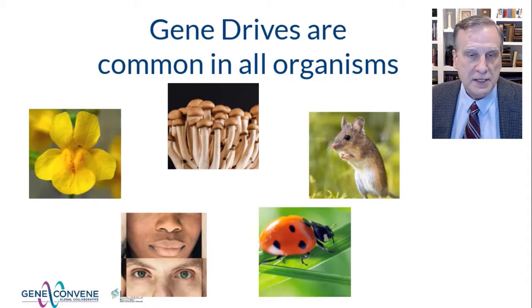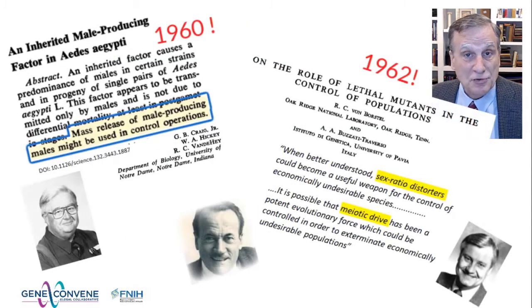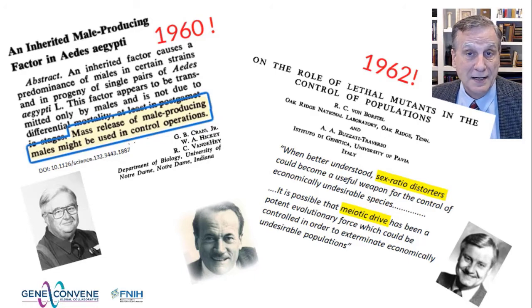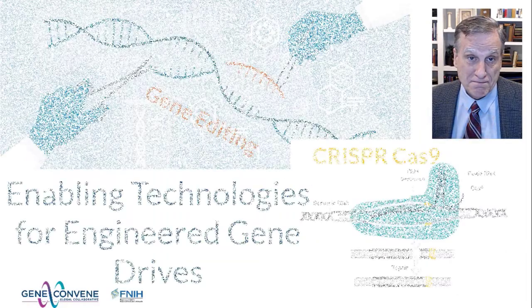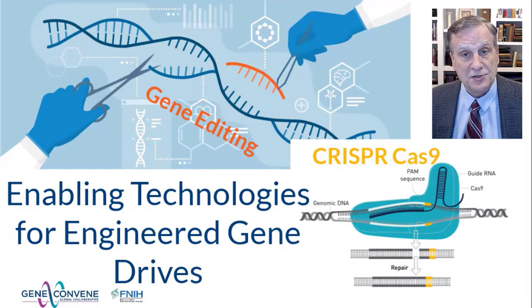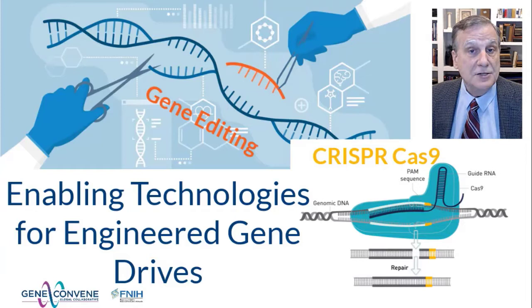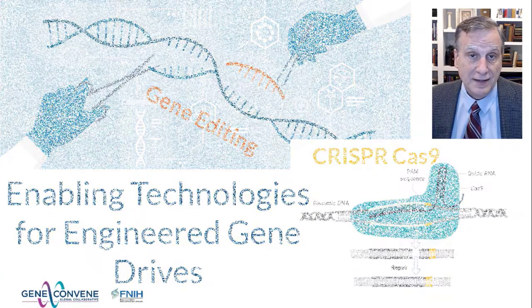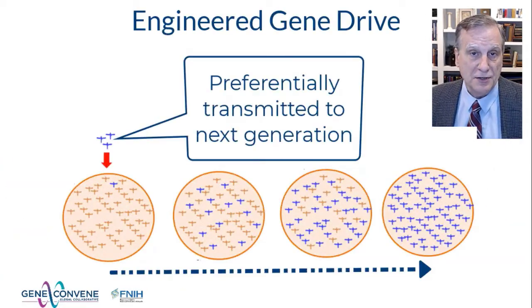Gene drive systems are common in nature. Mosquito biologists recognized the potential of these drive systems to serve as tools for controlling mosquito populations more than 60 years ago, but they didn't have the capabilities at the time to either use those drive systems or to recreate them in the laboratory. In the last decade in particular, advances in molecular genetics and the emergence of powerful gene editing systems, among other things, have enabled researchers to create assemblies of genes in the lab which, when introduced into the genome of a malaria-transmitting mosquito, exhibit very strong drive — that is, those genetic assemblies are preferentially transmitted to the next generation and spread rapidly through laboratory populations.